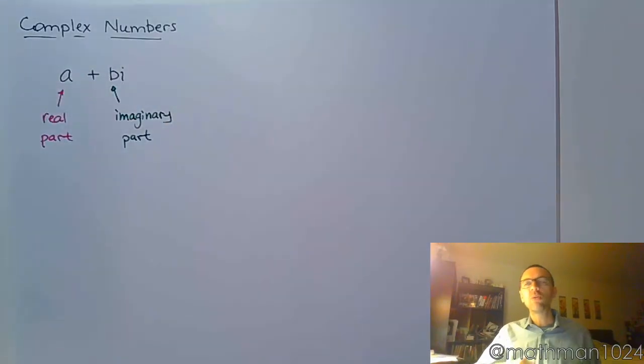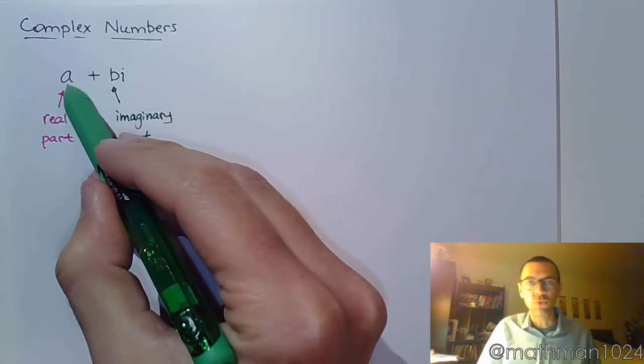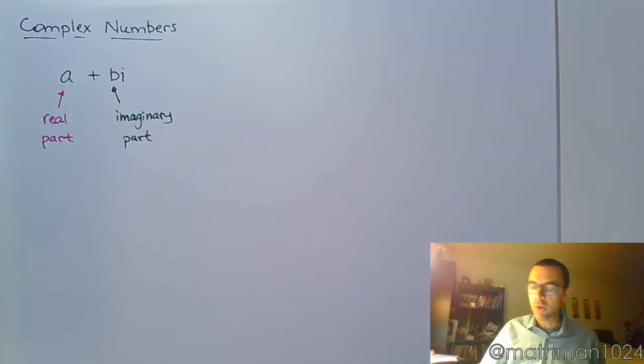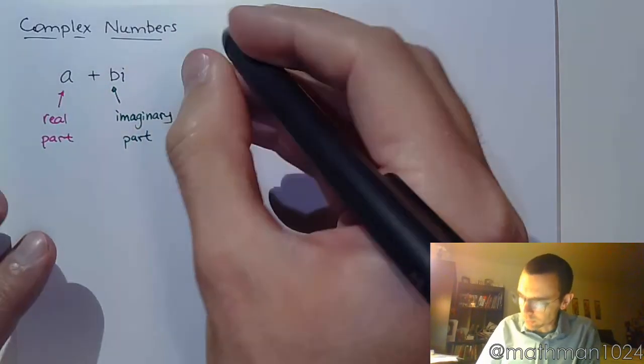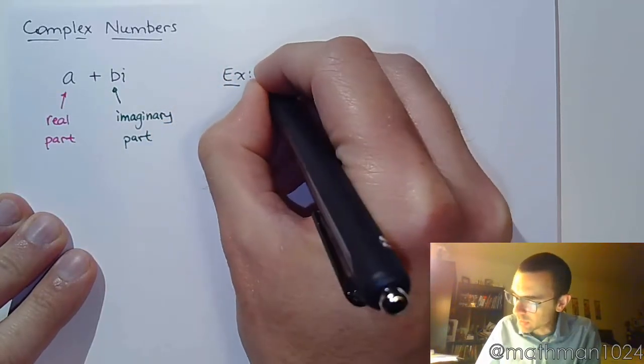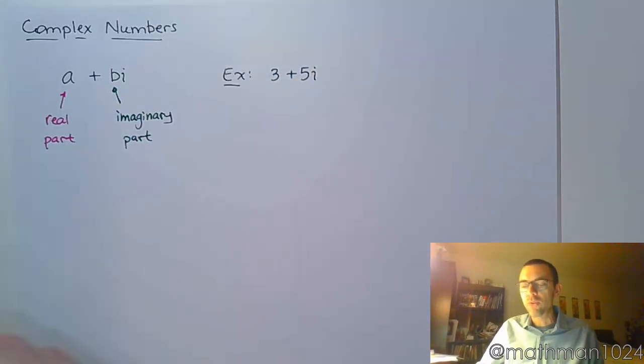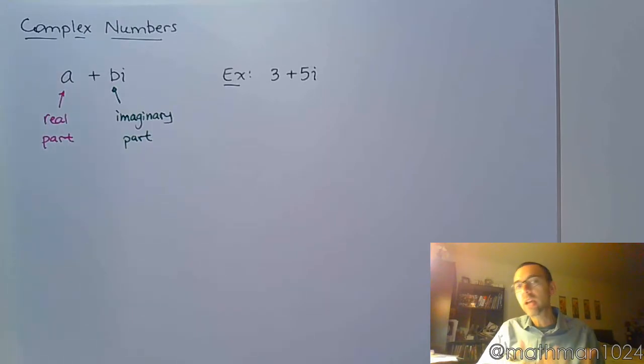The real part is just a. Now all the numbers that you've dealt with in your normal existence, they've been complex numbers, but up to this point you've had an imaginary part of zero, so you've only seen the real part. An example of a complex number would be something like 3 plus 5i. You've got a real part, you have an imaginary part, and together they form that complex number.